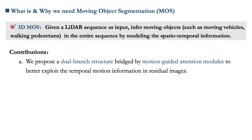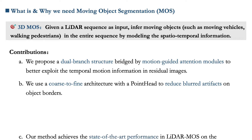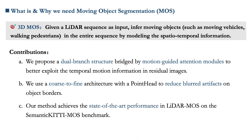Our contributions can be summarized as follows. First, we propose a dual-branch structure bridged by motion-guided attention modules to better exploit the temporal motion information in residual images. Second, we use a coarse-to-fine architecture with a point head to reduce blurred artifacts on object borders. Third, our method achieves state-of-the-art performance in LIDAR MOS on the Semantic KITTY MOS benchmark.